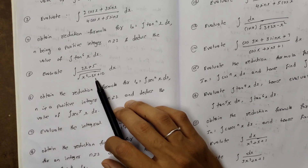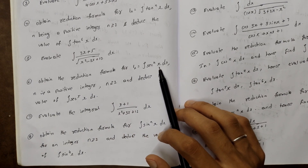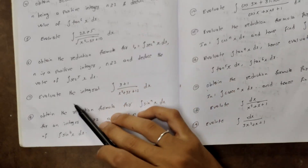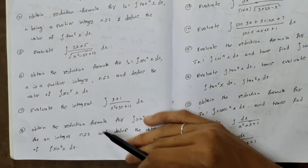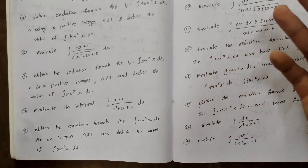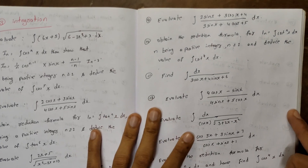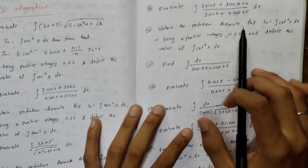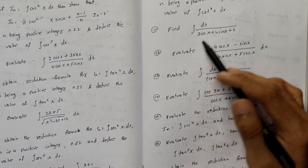Evaluate ∫(2x+5)/√(x²-2x+10) dx. Obtain the reduction formula for Iₙ = ∫secⁿx dx, n a positive integer ≥2, and deduce ∫sec⁵x dx. Evaluate ∫(x+1)/(x²+3x+12) dx. Find the reduction formula for ∫cot⁴x dx.